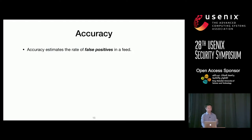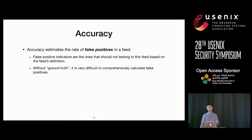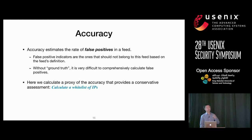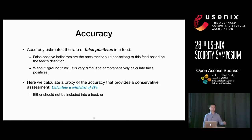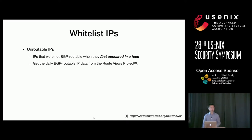We haven't yet considered the legitimacy of these indicators, which brings us to accuracy — estimating the rate of false positives in each feed. False positives are data that should not belong to a feed based on its definition. Since it is very difficult to comprehensively calculate false positives without ground truth, we took a conservative approach: we calculated a whitelist of IPs that either should not be included in a feed or, if included, would cause significant disruption. We then checked how much of the IPs in our feeds overlap with our whitelist. Our whitelist IPs come from three sources; the first is unroutable IPs — we use IPs that were BGP-unroutable when they first appeared in a feed, obtaining daily BGP routable data from the RouteView project.